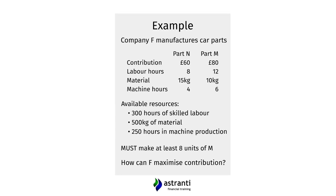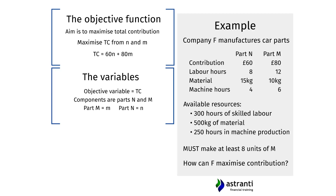The equation we need is called the objective function. All it does is calculate our contribution. Since our aim is to maximise total contribution, our aim is to maximise the objective function — to make its output as large as possible. The objective function in this situation is: TC (total contribution) = 60N + 80M.